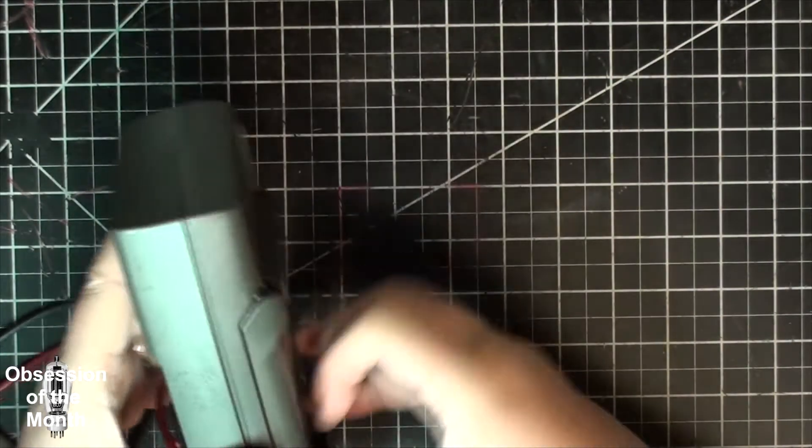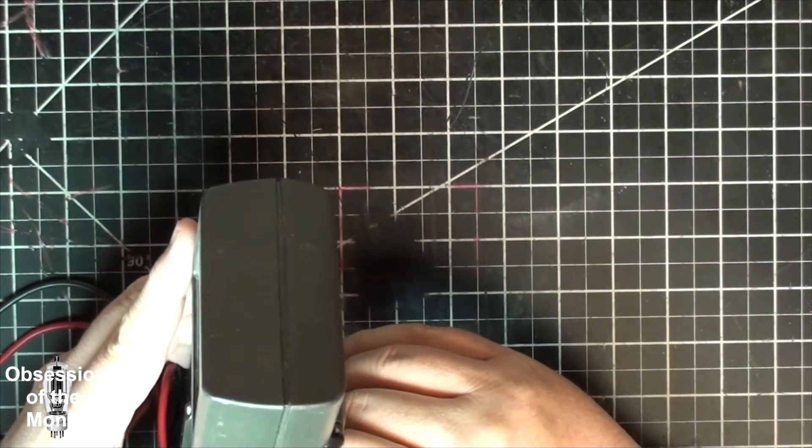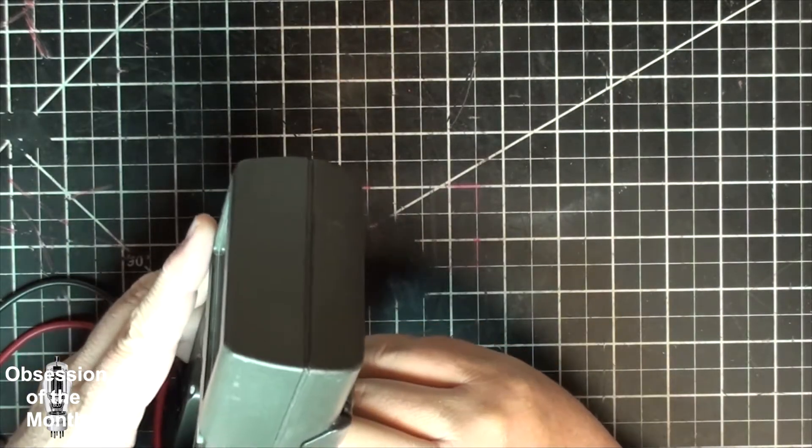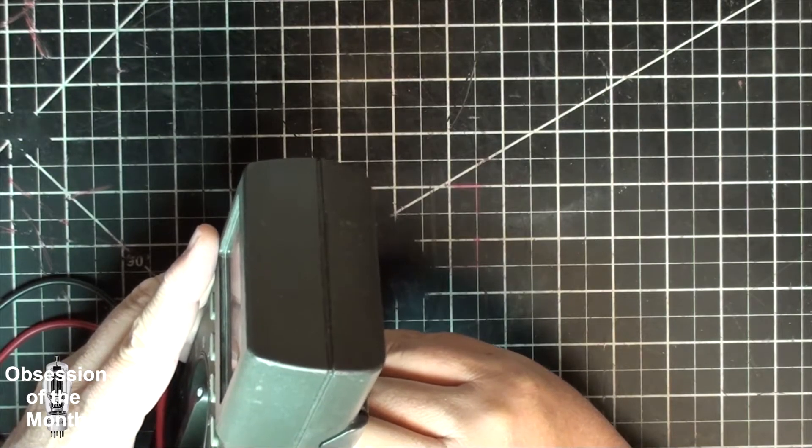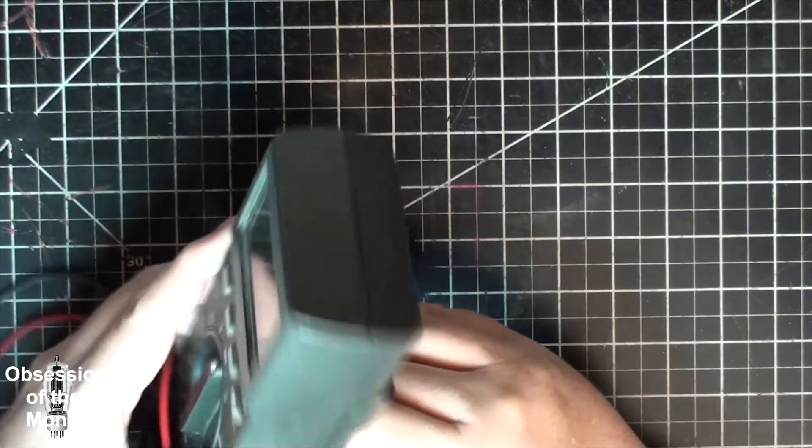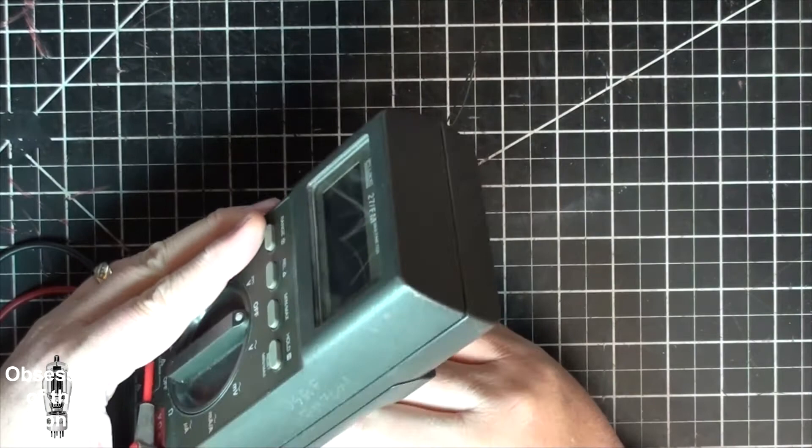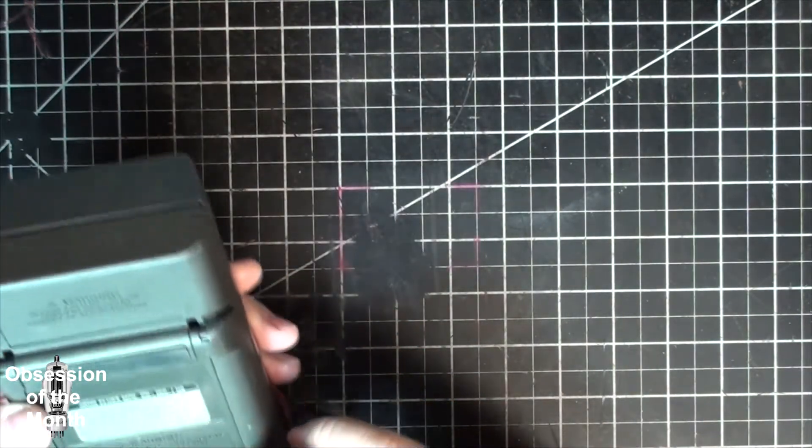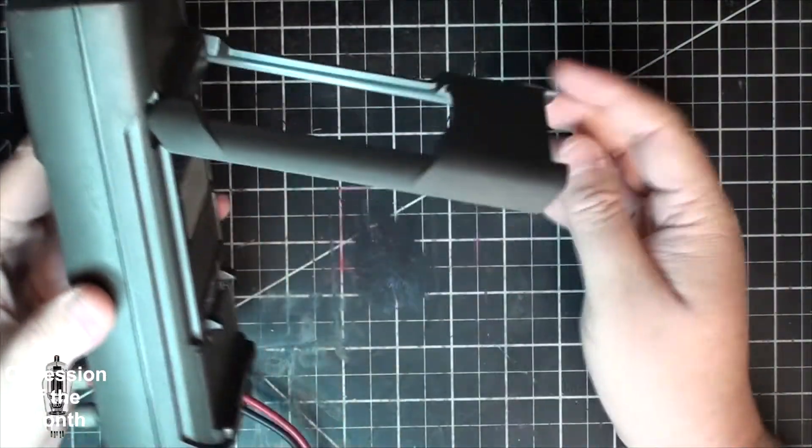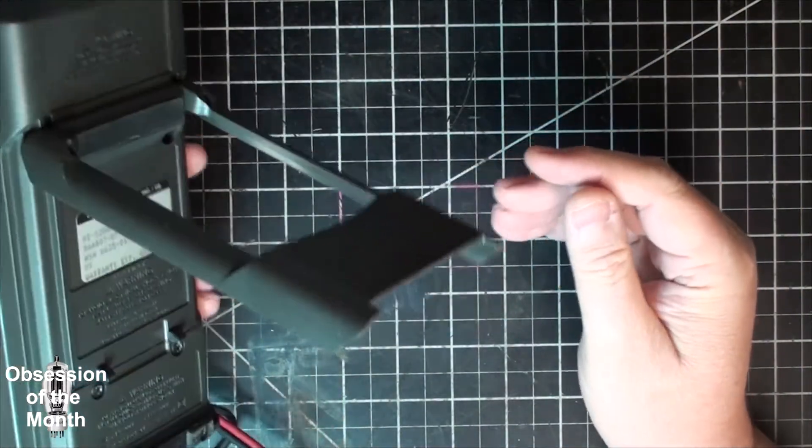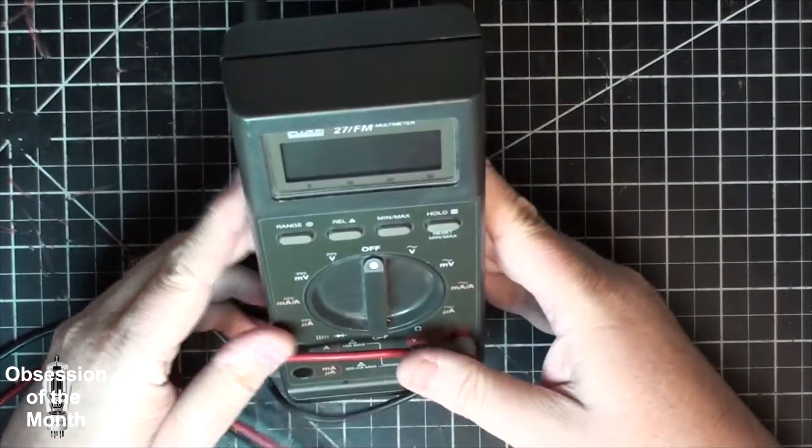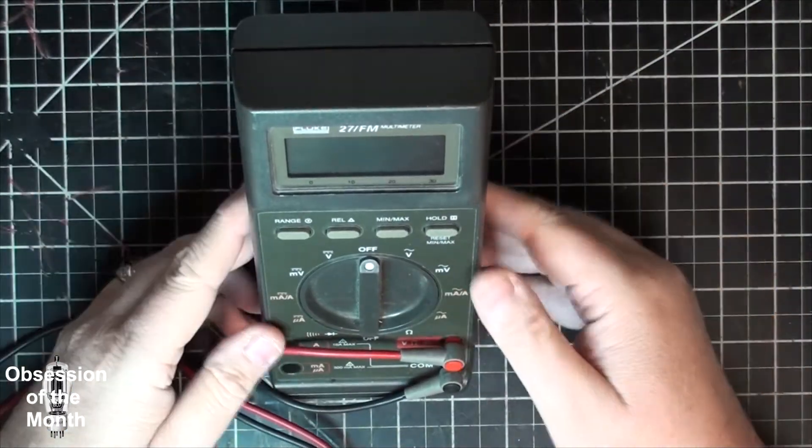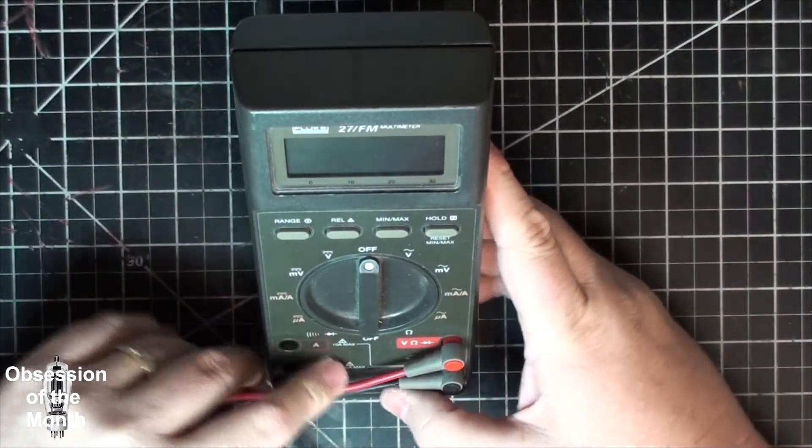And this thing has - oh wow, this still has a U.S. Air Force - so this was with the Air Force. There's a number etched into the side. This thing has a fold-out leg, so you can set it up like a bench multimeter.